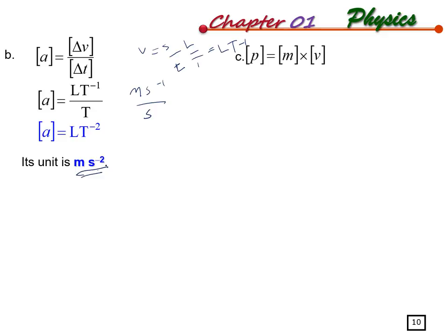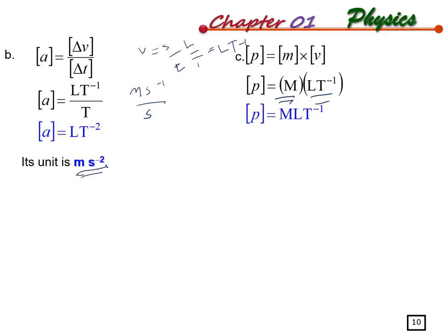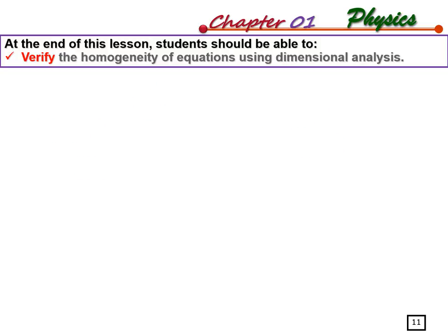For momentum: mass times velocity. Mass has dimension M, velocity is L over T, so momentum has dimension ML over T. In SI units, mass is in kilograms, length in meters, and time in seconds. You can relate the dimension directly to the unit and vice versa.